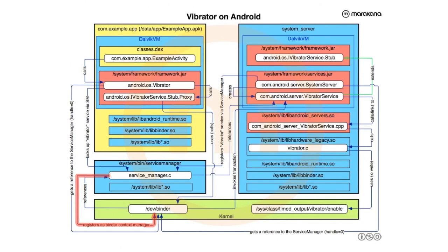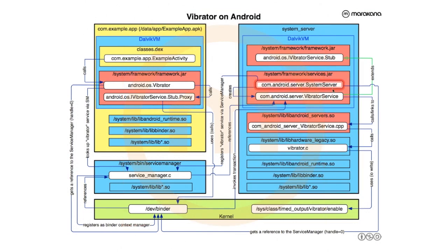After the service manager starts, Zygote starts up — this large Dalvik instance that listens on a Unix socket and forks itself to start applications. But before doing that, it forks itself to start the system server. The system server runs as the system user, which has the capability to talk to the service manager. The system server executes a SystemServer Java class, whose main method loads native libraries, registers JNI libraries with the JNI environment, then starts booting services.